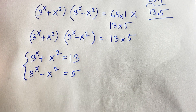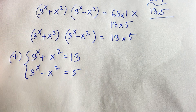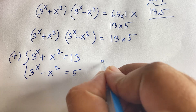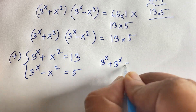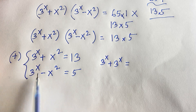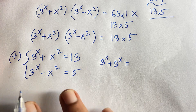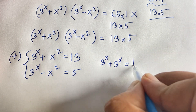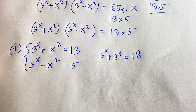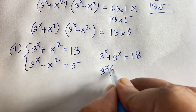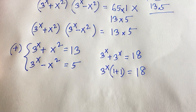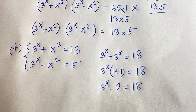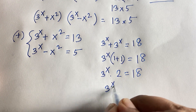We now have two equations. Adding them: (3^x + x²) + (3^x − x²) = 13 + 5. The x² terms cancel, giving 3^x + 3^x = 18. Factoring out 3^x: 3^x times 2 equals 18. Dividing both sides by 2 gives 3^x equals 9.